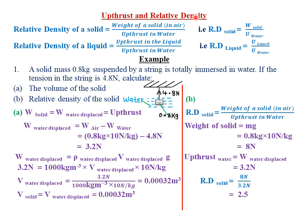Today we are looking at upthrust and relative density. Let's start by highlighting the formulas that involve calculation of relative density, both for solids and liquids. Relative density of a solid is given by the weight of the solid divided by the upthrust of that particular solid in water. Relative density of a liquid is given by upthrust in the liquid divided by upthrust in water.